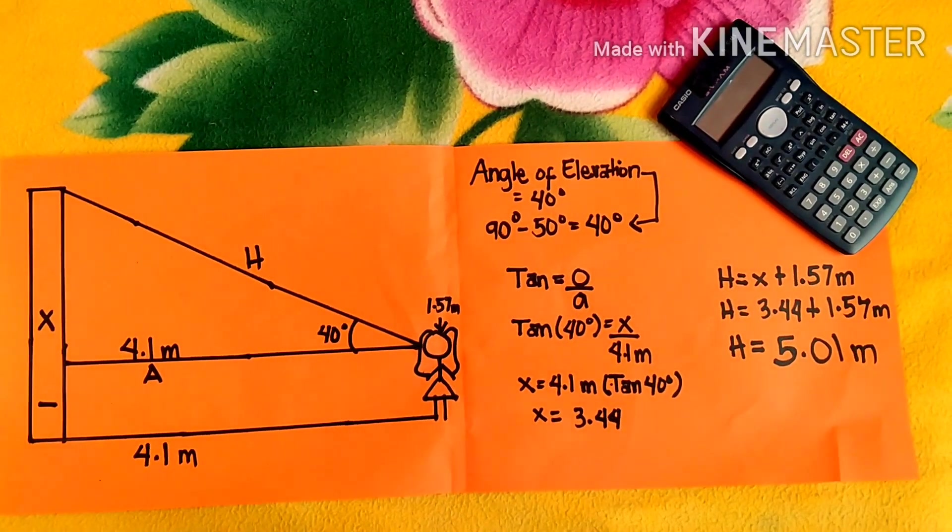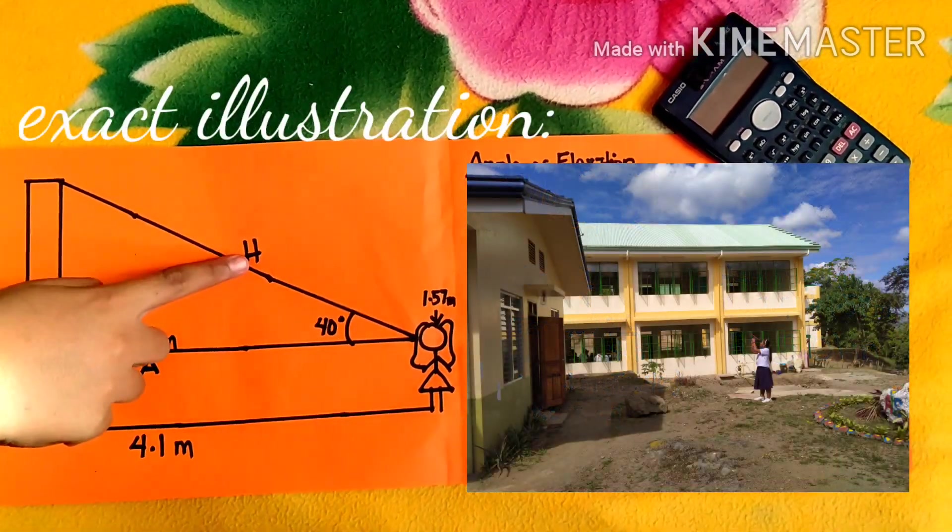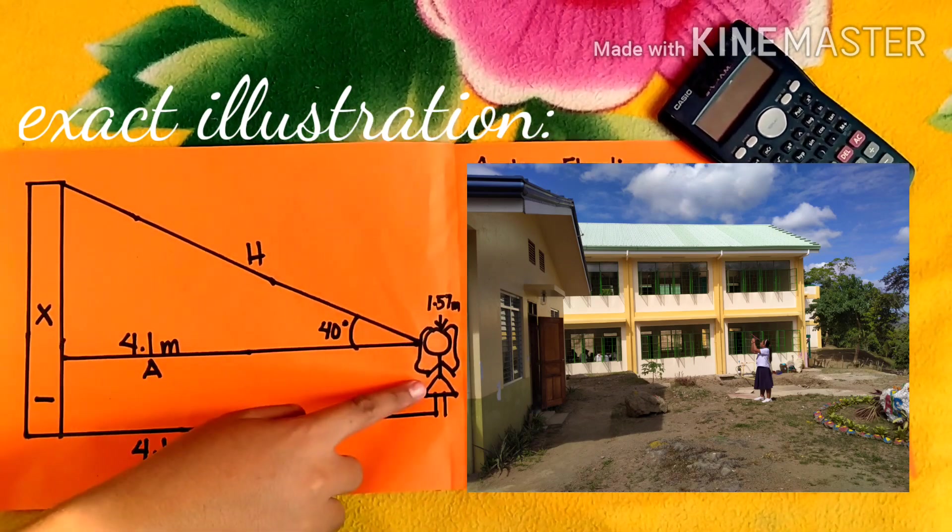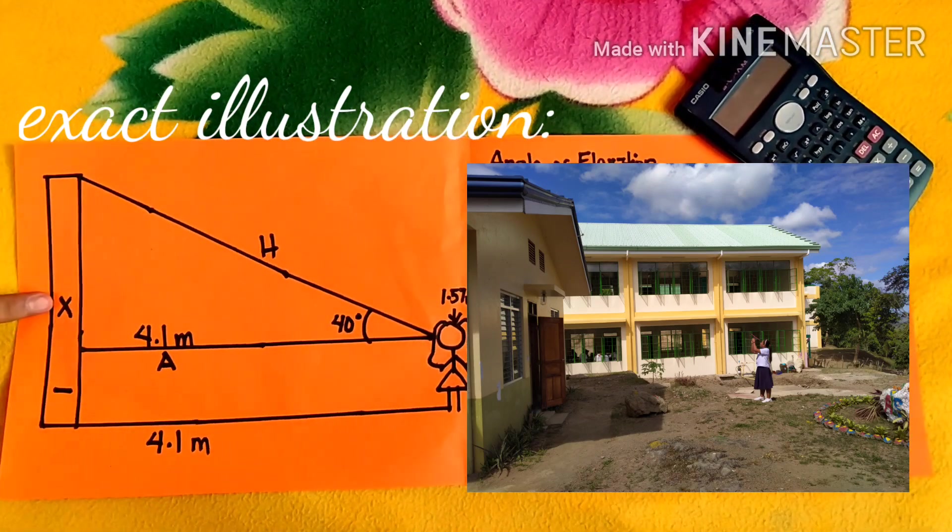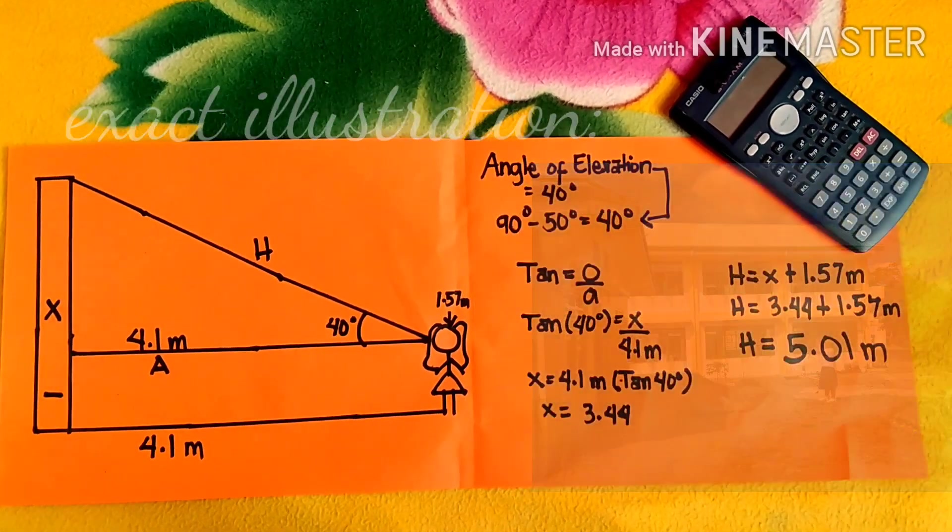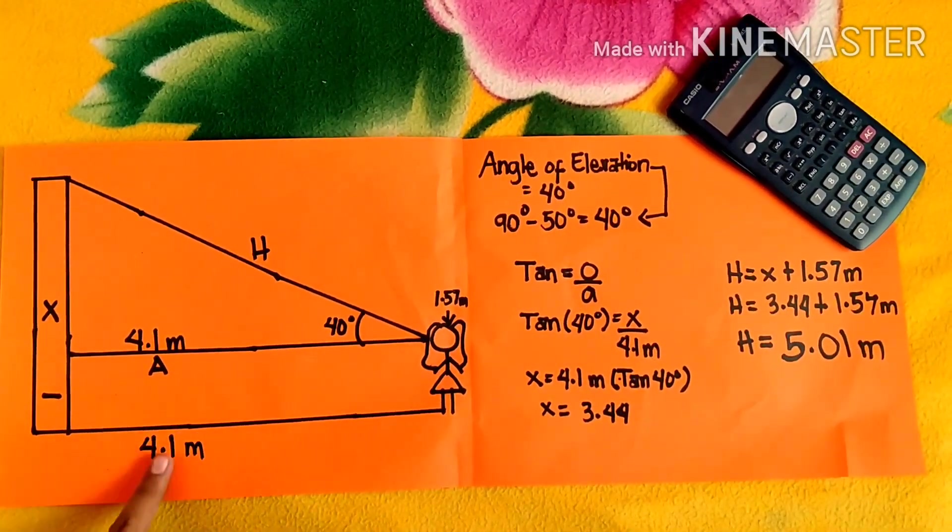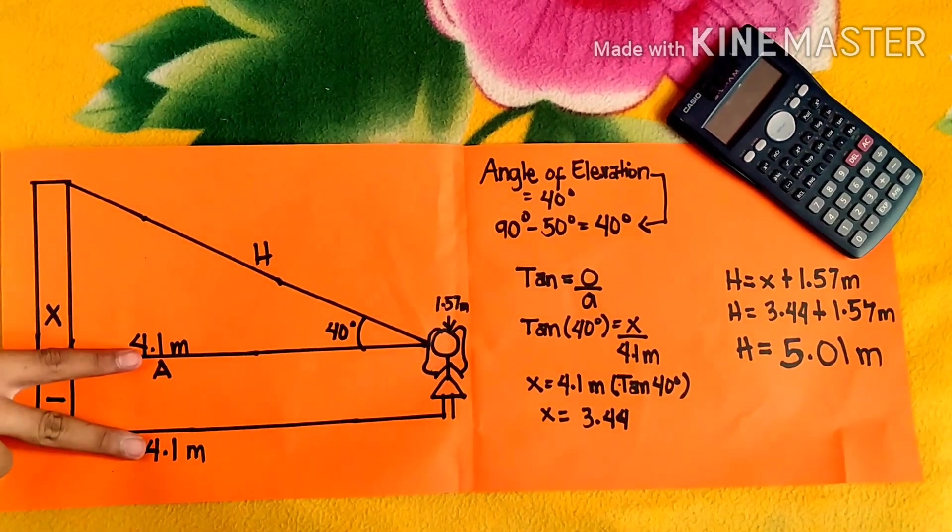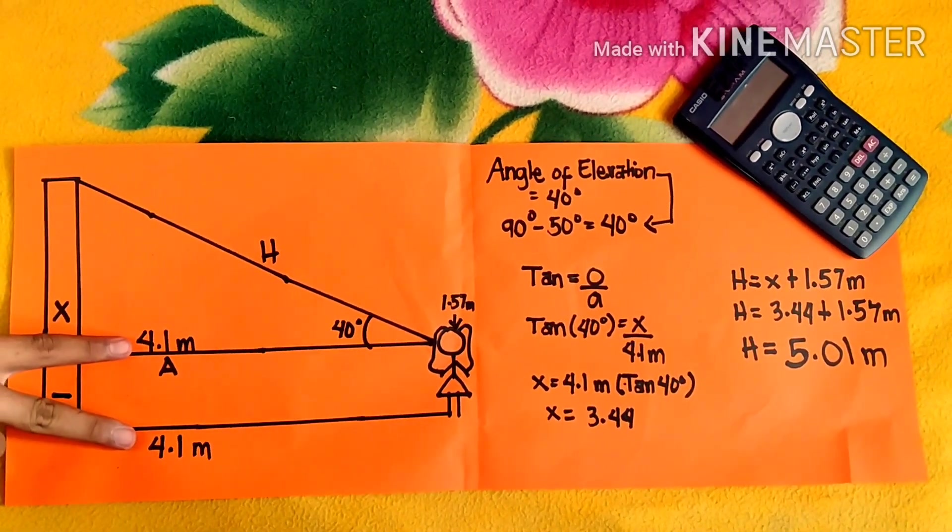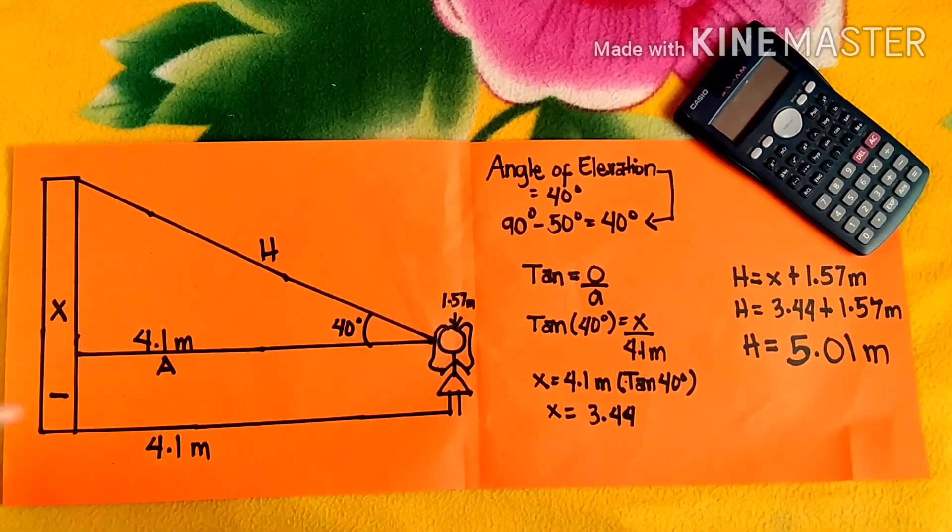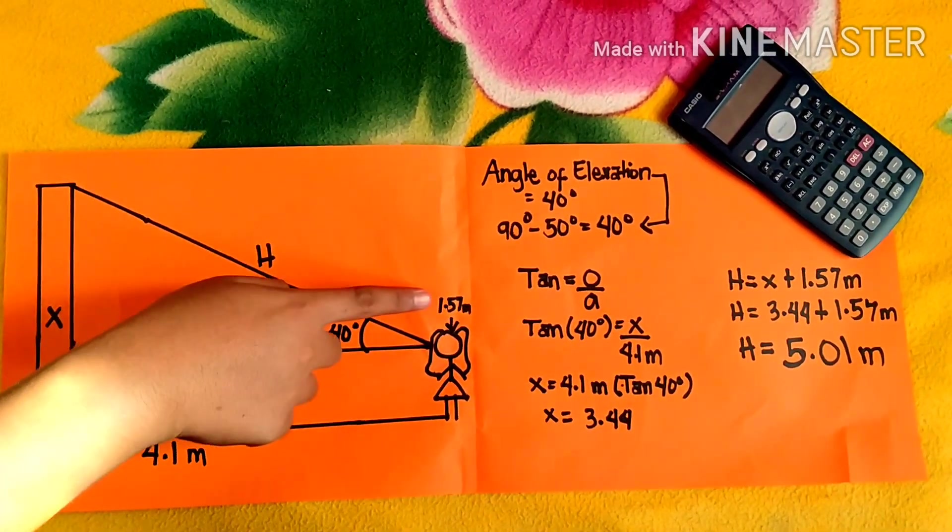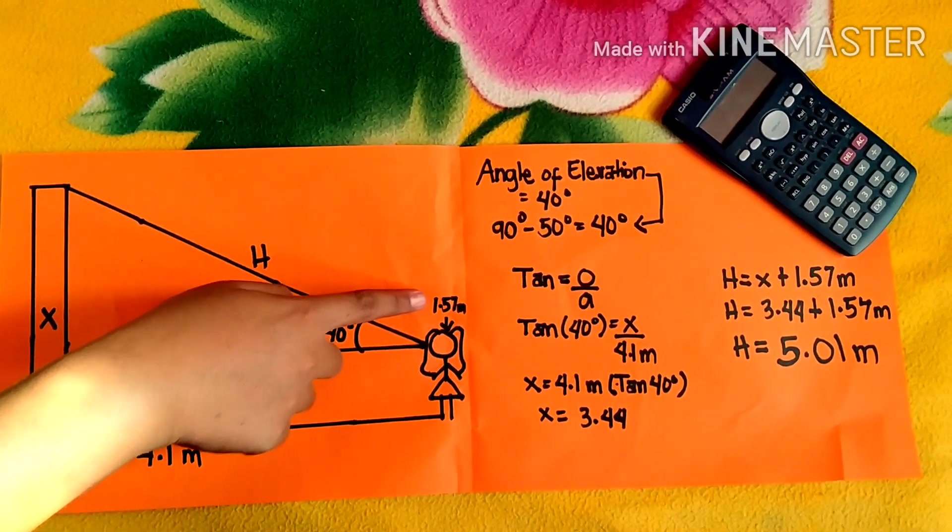This is the exact illustration. This is the hypotenuse, this is the adjacent side, and this is our observer. We denote x as the partial height of the building. The distance of the observer to the base of the building is 4.1 meters, and it's parallel to the adjacent side, so it is also 4.1 meters. The angle of elevation is 40 degrees, and the height of the observer from the eye to its feet is 1.57 meters.